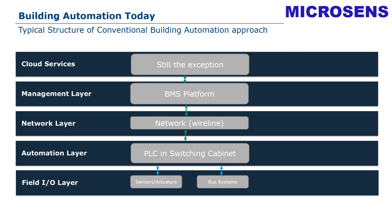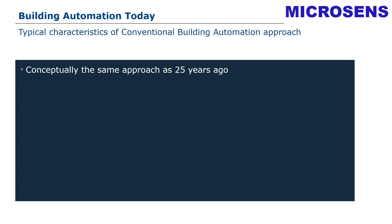So what are the typical characteristics? First, it is worth noting that we have conceptually the same approach as 25 years ago. This means that 25 years ago was the first major change in the area of automation, when we started the transition from analog technology to the first programming units — that was the era of the DDC controller.